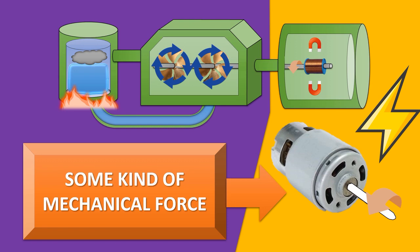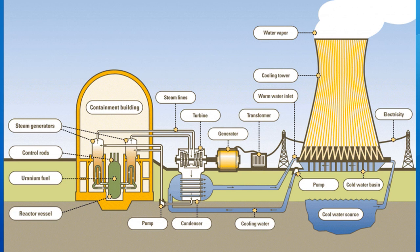So we have an interesting equation here: any kind of mechanical force — wind pushing it, steam, or a river — if it can cause the axle of a motor to spin, then you've got power. Here is an example of a nuclear power plant. On the left there's a containment building with uranium fuel. They use that uranium to heat water and produce steam, which flows through steam pipes into turbines. Those turbines spin the axle into a generator with copper wire and magnets, producing a charge that goes through the transformer to generate electricity.